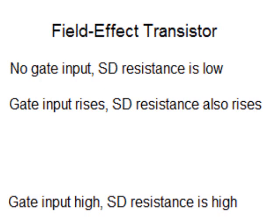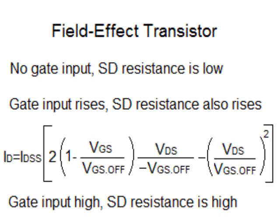When the FET's gate voltage is between saturation and pinch-off, the equation for calculating source-drain current involves a squared term. There are two things to know about this equation: first, manufacturing variations mean each device reacts differently, so the equation isn't very accurate in practice. Second, because of that squared term, the output of the FET between saturation and cutoff is not linear — it's a quadratic relationship.